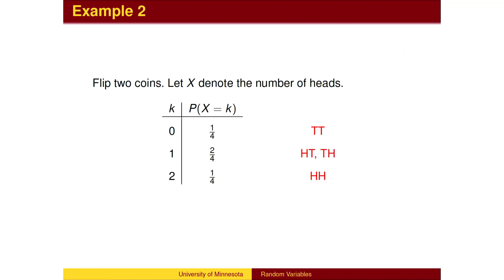Here is a second example. If we flip two coins, we may wish to count the number of heads. Notice that the outcomes themselves are lists of heads and tails. We assign a numerical value to each string, based on the number of heads. We can find probabilities associated with each value of the random variable.